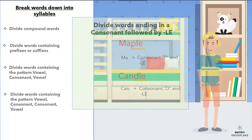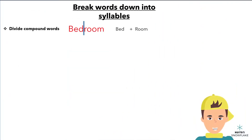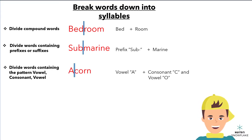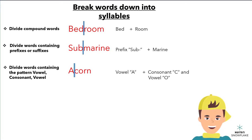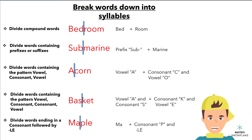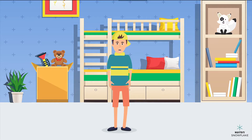To summarize: divide compound words into their parts. Words containing prefixes or suffixes should be divided into the prefix or suffix and the rest of the word. The pattern vowel, consonant, vowel tells us that the word should probably be divided between the first vowel and the consonant that follows it — but there are exceptions. If the pattern is vowel, consonant, consonant, vowel, divide it between the two consonants. And if a word ends in a consonant and 'le,' it should be divided right before the consonant. If you keep these rules in mind, you will find it easier to read texts and break multisyllabic words into their syllables. Have fun!